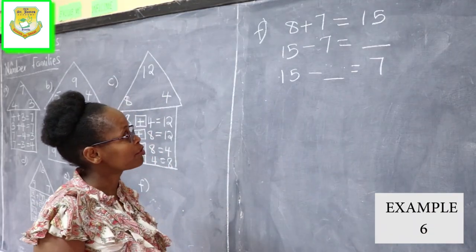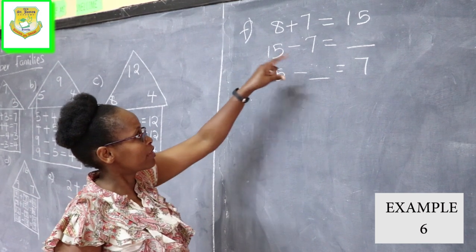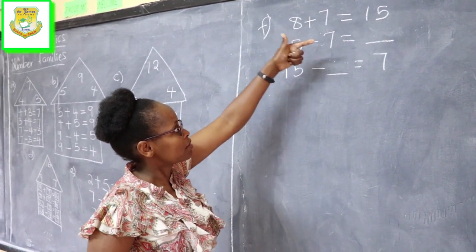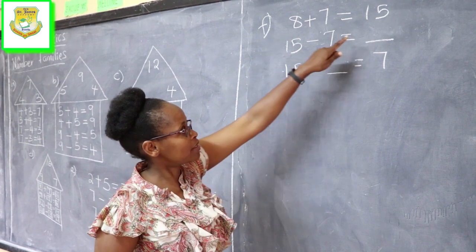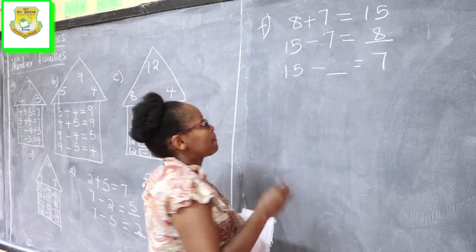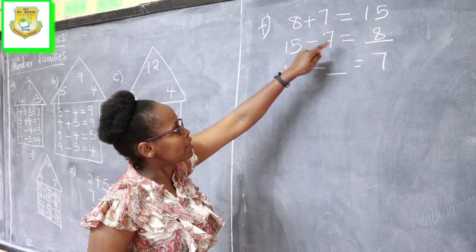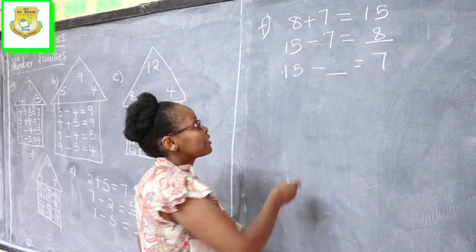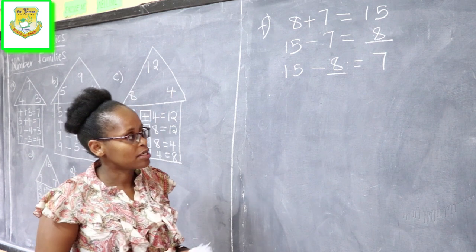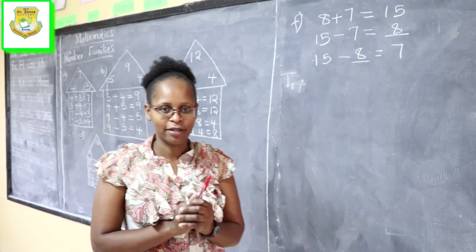Here is another example: 8 plus 7 equals 15. We can form a number family from these three numbers. 15 take away 7 — you look at the first set: 15 is represented, 7 is represented, so the missing number is definitely 8. Then 15 take away blank equals 7: in our first set we had 8, 7, and 15. Since 15 and 7 are already represented, the answer is 8. That is how we present number families using take away and addition signs. That's the end of our lesson — until next time, God bless you, bye-bye.